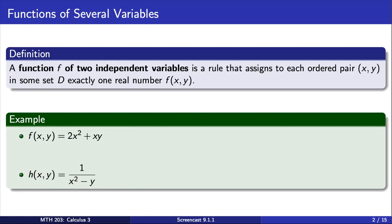The functions f and h here are functions of two independent variables. We can evaluate these functions at ordered pairs for which they are defined. For example, f evaluated at the ordered pair (1, -4) is equal to -2. So f assigns the ordered pair (1, -4) the real number -2. Similarly, we see that h(3, 2) is equal to 1/7.